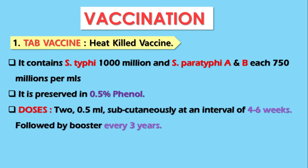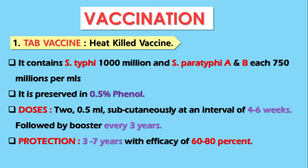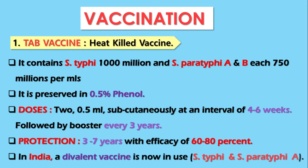The TAB vaccine is given in 2 doses of 0.5 ml subcutaneously at an interval of 4 to 6 weeks, followed by booster doses every 3 years. It gives protection for about 3 to 7 years with an efficacy of 60 to 80%. In India, a divalent vaccine is used containing only S. typhi and S. paratyphi A, because S. paratyphi B is very rare and is therefore not included in the vaccine nowadays.